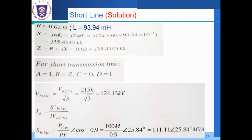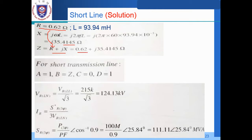We have R equal to 0.62 ohms and inductance L equal to 93.94 millihenry. So X equals j·omega·L, which is j·2·pi·F·L. Substituting all values: 2·pi multiplied by 60 multiplied by 93.94 millihenry, giving X equal to j35.4145 ohms. Therefore, Z equals R plus jX, which gives us Z equal to 0.62 plus j35.4145 ohms.